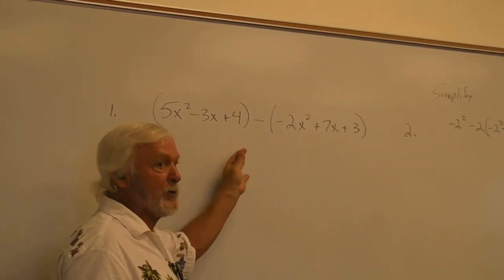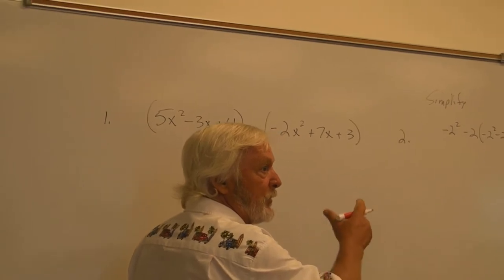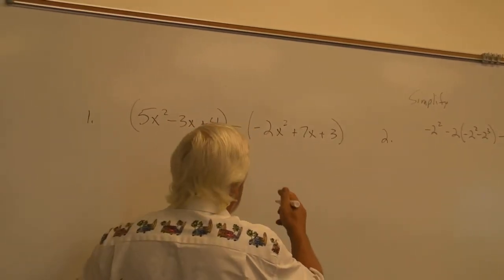You will get no credit for either of those sections if you don't do it the way I asked you to do it. That means you're going to be pulling out your common factor.